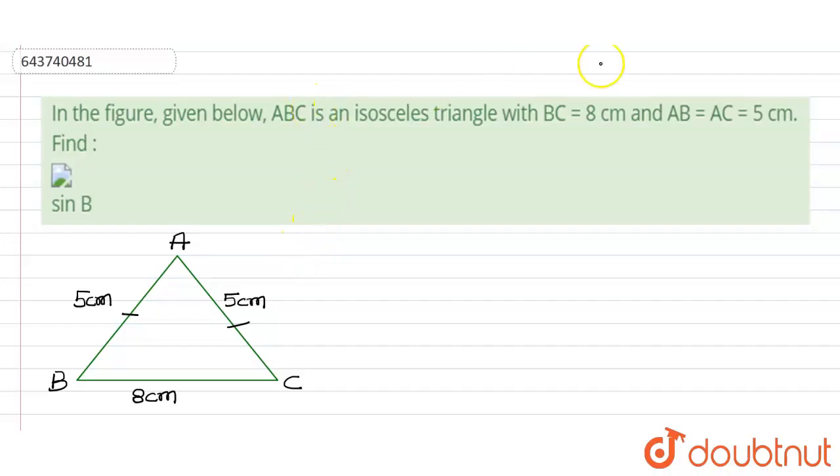Hello students, in this problem we have an isosceles triangle ABC in which BC equals 8 centimeters, and AB equals AC equals 5 centimeters. We are required to find the value of sine B.